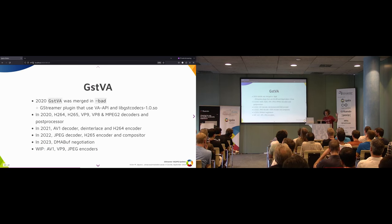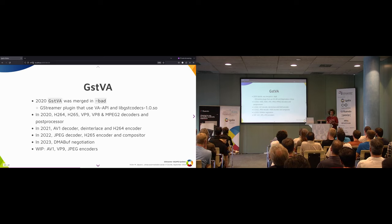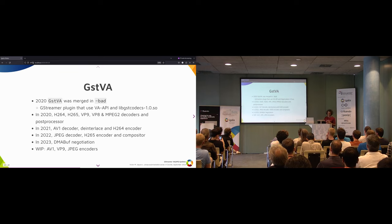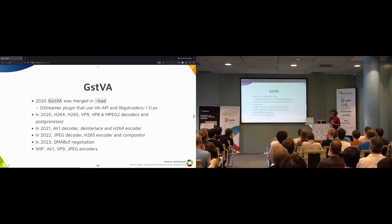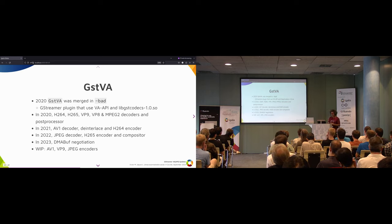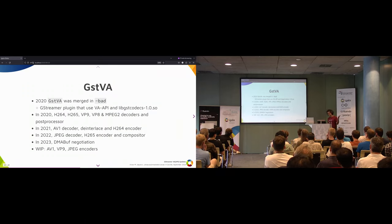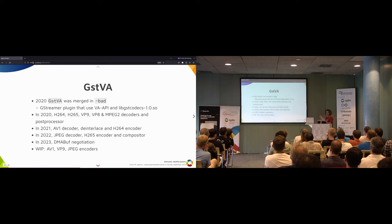In 2020, GstVAAPI was merged as part of BAT, sharing the GST codec library. That same year we implemented H.264, H.265, VP9, VP8, MPEG-2 decoders and a post-processor. In 2021, Junjuan implemented the AV1 decoder and we implemented interlace support and the H.264 encoder. In 2022, the MPEG decoder, H.265 encoder, and compositor were added. This year the big change has been how to negotiate DMA-buf formats, and in the pipeline as work in progress there are encoders for AV1, VP9, and JPEG.